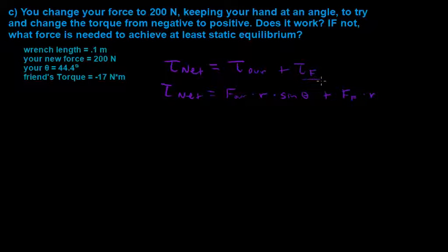But we've been given our friend's torque, so we don't have to write those out separately. So the net torque is then going to equal our new force of 200 newtons times 0.1 meters times the sine of 44.4 degrees plus our friend's torque of negative 17 newton meters.